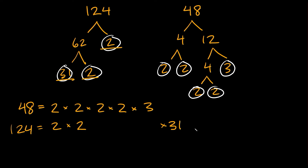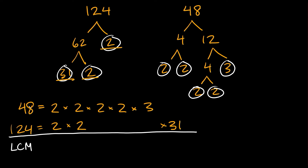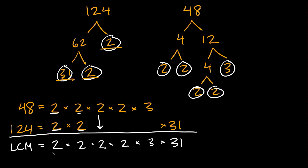Now we have one last step: combine the factors vertically. The least common multiple of 48 and 124 is found by writing each column only once. Where we have a 2 and a 2 in the same column, we write a single 2. We repeat that for each column — single 2, single 2 — and bring down the lone 2, the lone 3, and the lone 31 straight down. So the LCM equals 2 times 2 times 2 times 2 times 3 times 31.